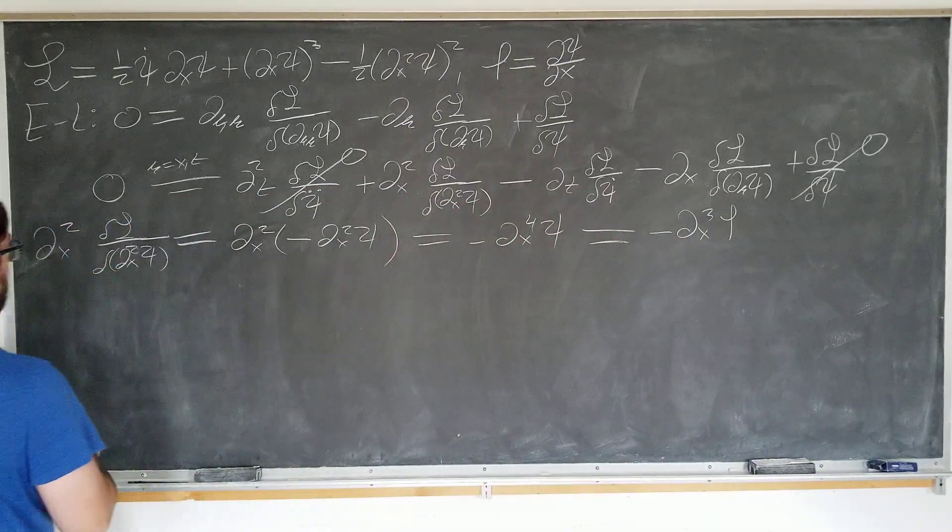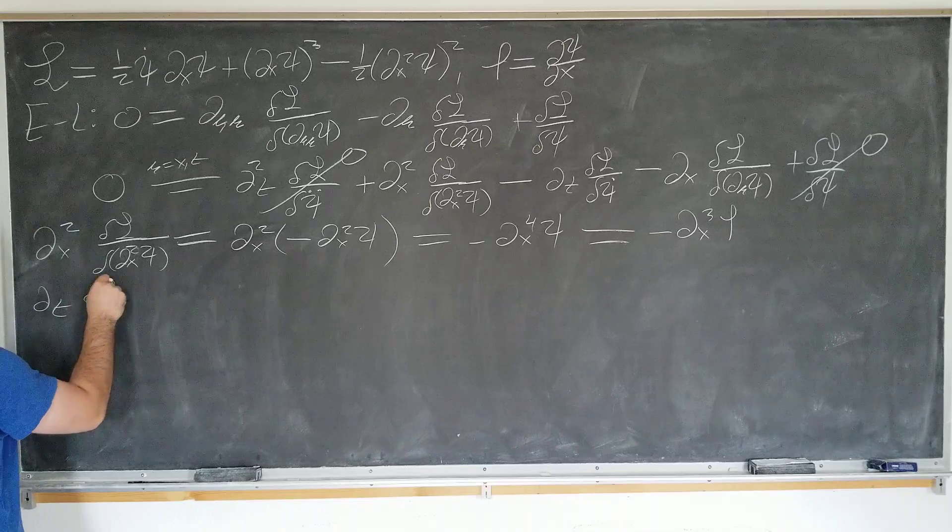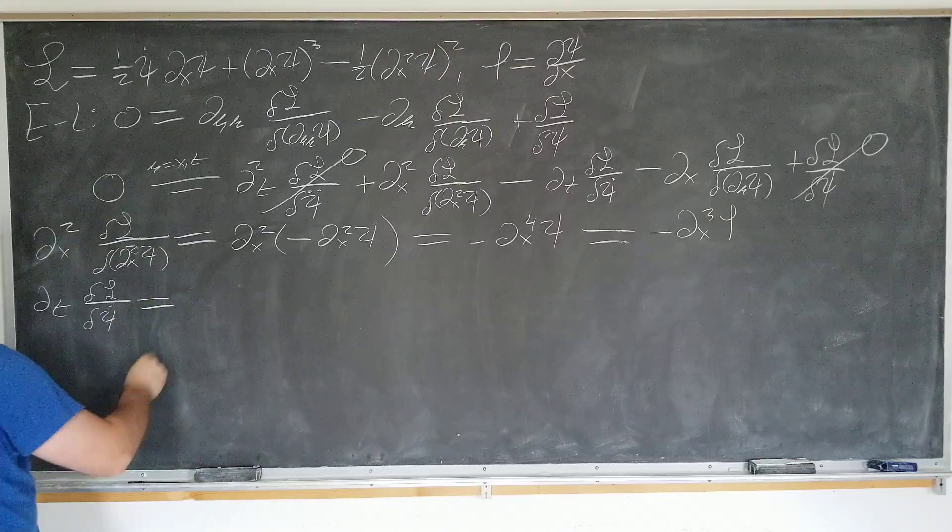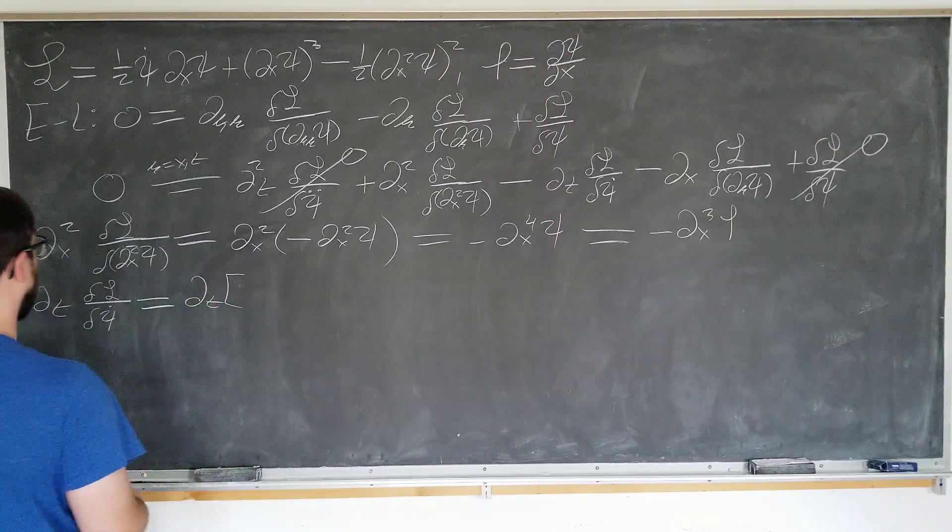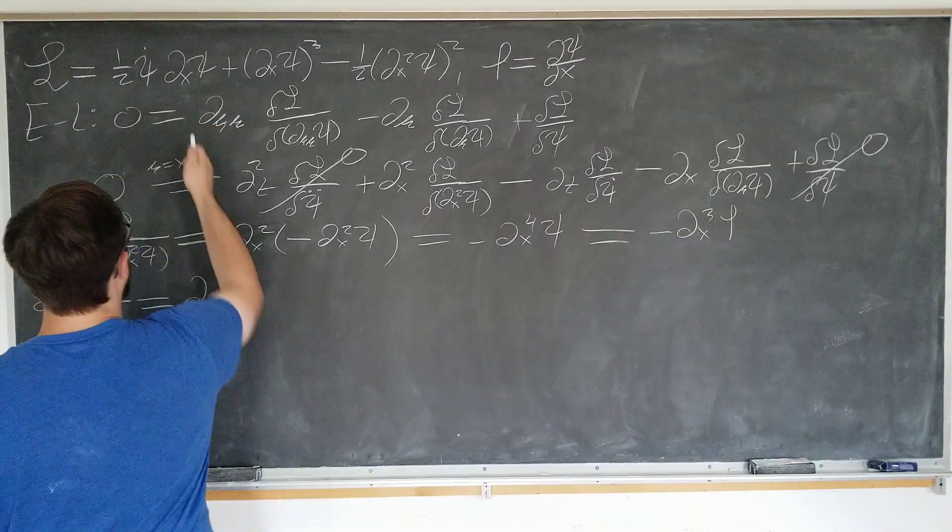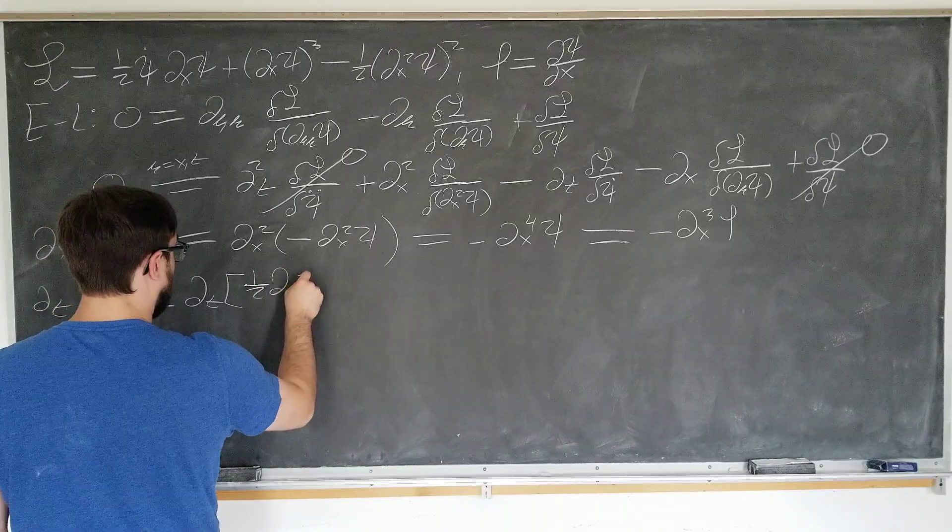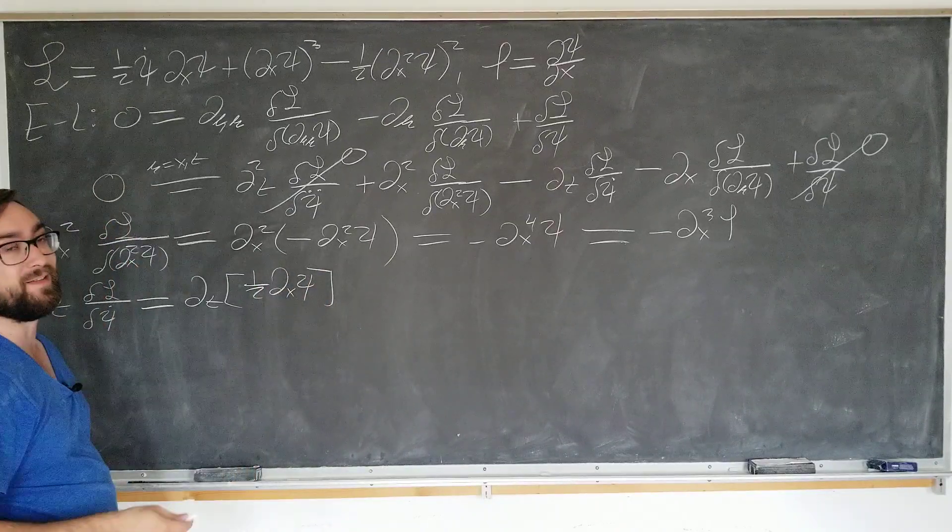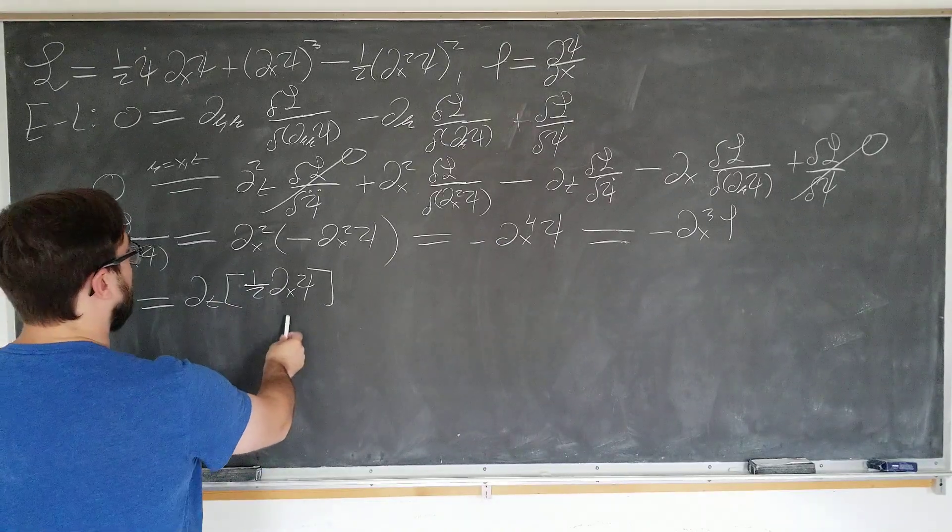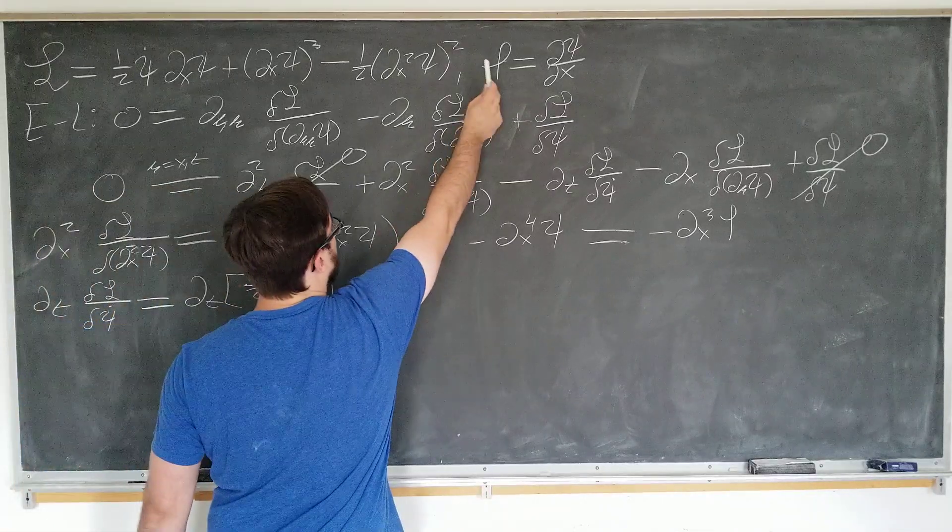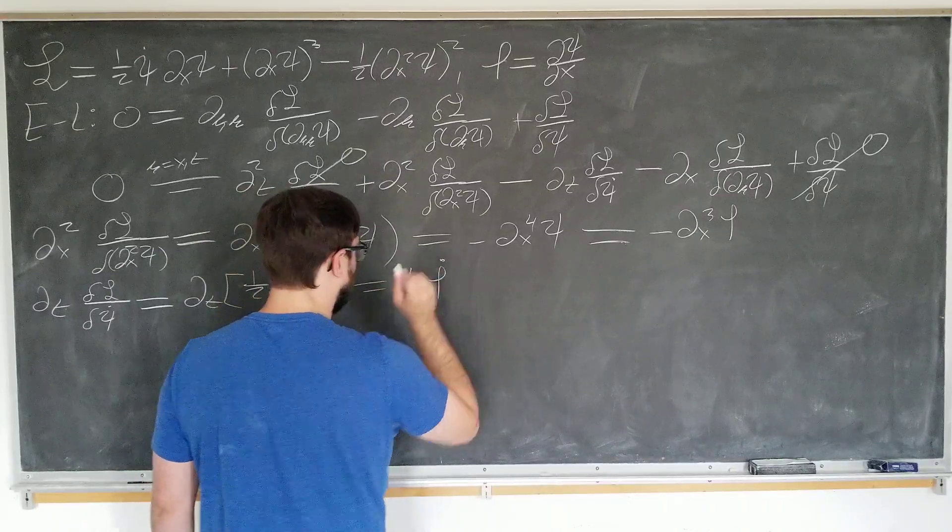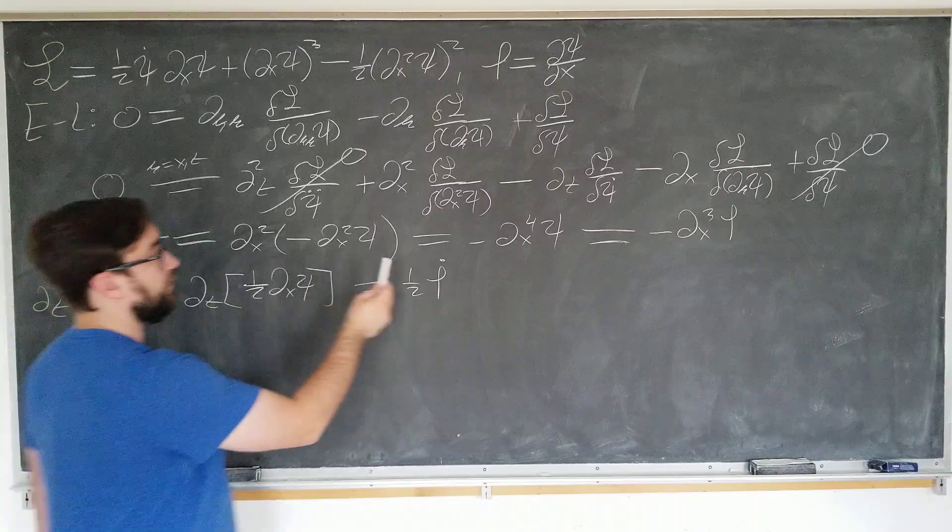Next term, time derivative of delta L by delta phi psi dot is equal to the time derivative of, okay. I see a psi dot here. That's the only one. So it's time derivative of one-half dx phi. Psi. Psi, I mean, psi. I'm writing the things correctly. I'm just not saying them. Okay. Okay. So we have dx phi is, dx psi is phi up here. So I just take the time derivative of one-half of phi dot.